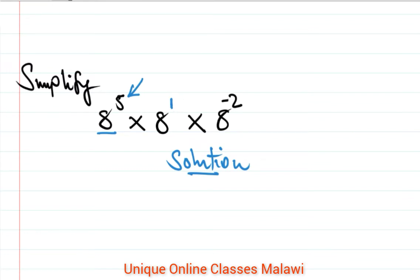8 to the power 1, and then we have 8 to the power negative 2. So if you can see how we are multiplying...